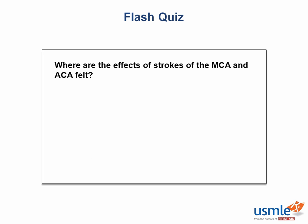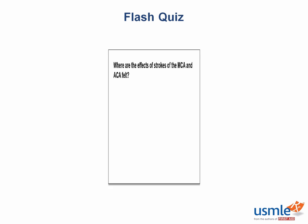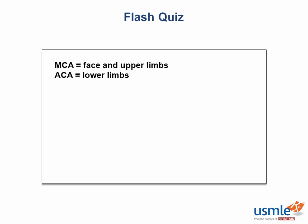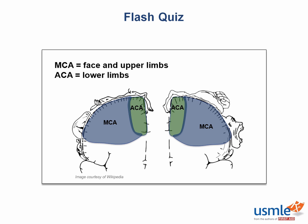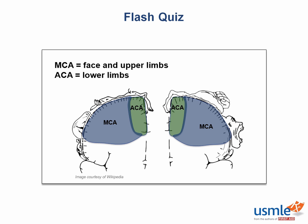Now it's time for a flash quiz: where are the effects of strokes of the MCA and ACA felt? Generally, MCA strokes affect the face and upper limbs, while ACA lesions affect the lower limbs. Looking at the homunculus, the ACA region corresponds to the trunk and lower limb, whereas the MCA covers the upper arm and face — the same applies for both the motor and sensory cortex.